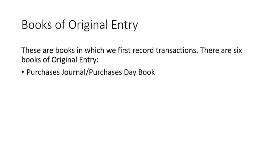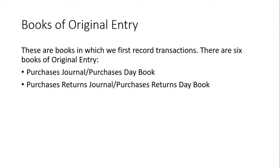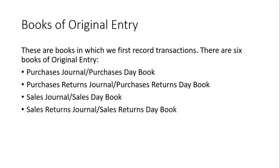We have the purchases journal or the purchases day book. We have the purchases returns journal or the purchases returns day book. We have the sales journal or the sales day book. We have the sales returns journal or the sales returns day book. We have the cash book, and then we have the general journal. These are the six books of original entry.